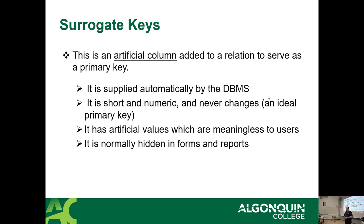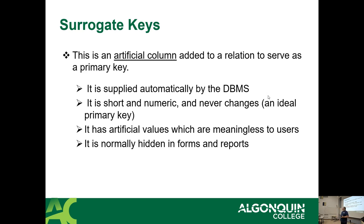Now we're going to get to surrogate keys. Last week I was talking about not using real-world items like social insurance numbers, SSNs, or email addresses as primary keys because they can change and are unreliable. The right solution is what they call a surrogate key — an artificial column that has no real-world meaning, so it's artificial. It is populated automatically by the database, meaning programmers don't need to set any values and users don't supply any values.